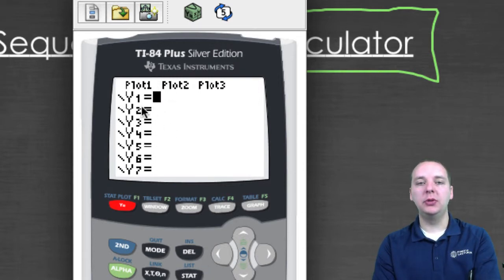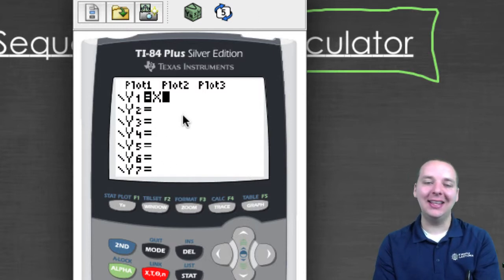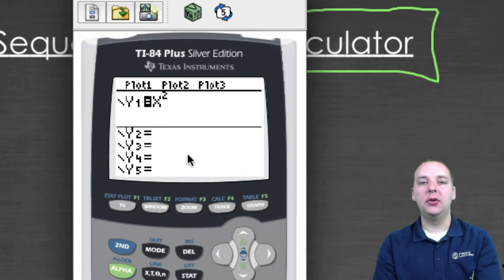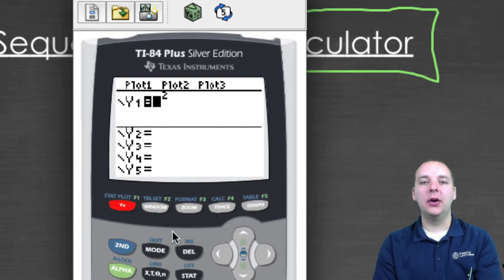This is where we've always graphed things. When you push y equals, it wants you to tell it something to graph. And if you go to your variable button, what shows up is an x, not an n. The reason this is the default mode is because we study functions so much in algebra class, which is by far the most common math course that students take. They made this the default setting, function mode. So if you went ahead and graphed something like x squared, you get a parabola.